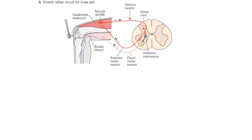At the same time, these sensory neurons also connect to some inhibitory interneurons, and these inhibitory neurons then connect to motor neurons that go to the opposite muscle. So whenever the sensory neurons are activated, they cause contraction of the quadricep muscles and also cause extension of the flexor muscles on the other side. And because the leg is hinged at the knee, and this muscle contracts while the other extends, the leg moves forward.